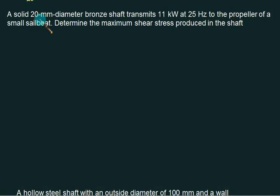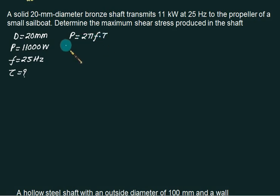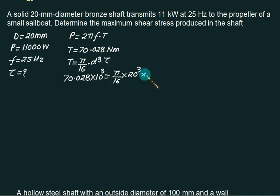A solid shaft of diameter equal to 20 mm. Bronze shaft transmits 11 kilowatts power transmission at frequency F equal to 25 hertz to the propeller of a small sailboat. You want to calculate maximum shear stress tau max. Very first thing is that you have to calculate torque. Just now we have developed the formula that 2πF multiplied by T is power. So you substitute this and calculate torque. Torque comes out to be 70.0. And torque equals pi by 16 into D cube multiplied by tau. So put for this 70.028, remember to substitute in mm: 10³ pi by 16, D cube is 20³ multiplied by tau and confirm this value of tau is 44.6 megapascal.